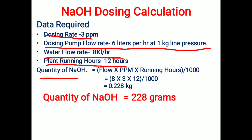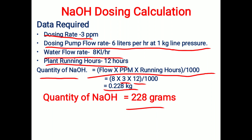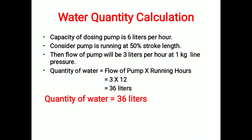The quantity of NaOH is calculated using this formula: Flow × PPM × Running Hours ÷ 1000. Here, flow is 8 kL/hr, PPM is 3, and plant running hours is 12. After calculation, we get 0.228 kg, that is 228 grams. This is the quantity of NaOH required.